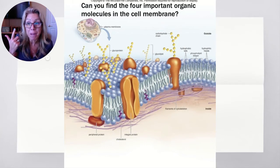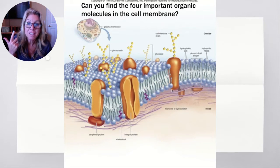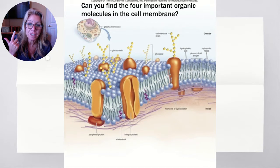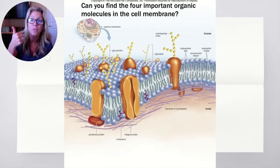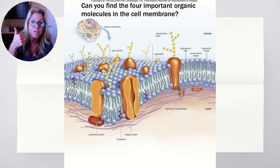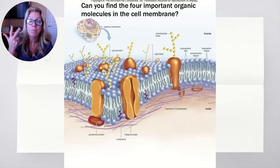Now, the other type of lipid is steroids. You can see steroids too — see the four rings right here. So we have proteins, phospholipids, and steroids, which are types of lipids.